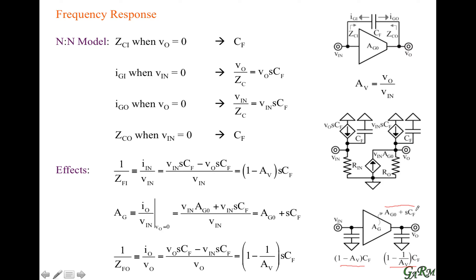Now let's apply some very important conclusions. What if the gain of the amplifier is inverting and much less than 1 in magnitude — so it amplifies but it's inverting? That means (1 − A) is much greater than 1, so the combined input capacitance is very high. This makes sense: a small variation in input voltage produces an inverting, much larger variation at the output. The voltage across the capacitor is being amplified by the amplifier, so the capacitor draws far more current — which is the effect of a much higher capacitance.